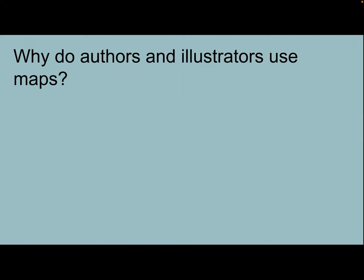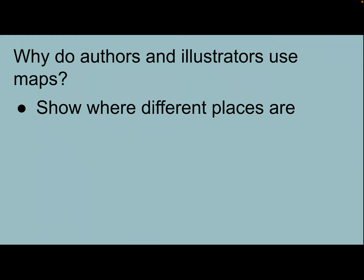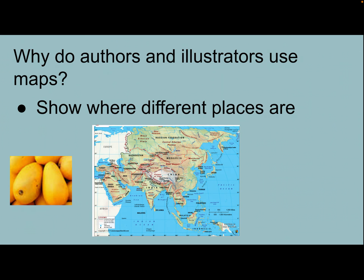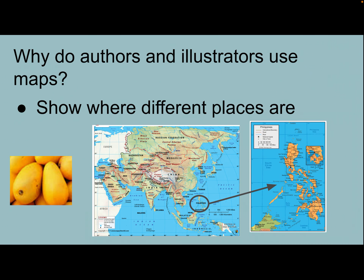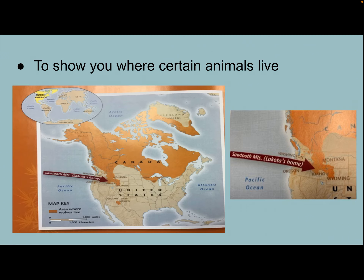So, why would an author or an illustrator use a map or legend in their book? First, to show where different places are. Let's say I was reading a story and it talked about mangoes and how they could only be found in Cebu, Philippines. Well, I might not know where that was. So the author or illustrator could include a map to show us where the place is. Sometimes, when a map is too small and it's hard to see information, the author will even blow up the map so we can see more detailed information. And here is the island of Cebu. So, authors and illustrators use maps to show where different places are.